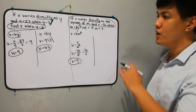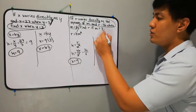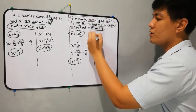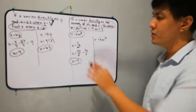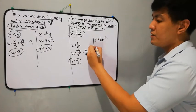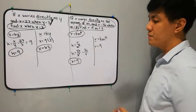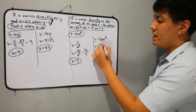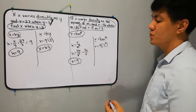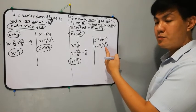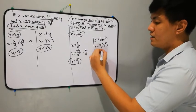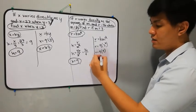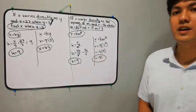The next step is to solve for the missing value of the variable, using the second statement. We use the equation R is equal to k times M squared. Find R if M is equal to 3, so R is what's missing. The value of k is 9. The value of M now is 3 — from the second part. So we have 9 times 3 squared. Simplify the exponent first: 3 squared is 9. Then R is equal to 9 times 9, which is 81. That is our answer.